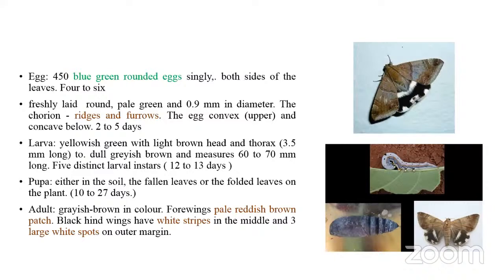The female moth lays around 450 blue-green rounded eggs sculpted singly on the leaves of the castor plant. Eggs are laid singly on both sides of the leaves; four to six eggs are observed on each leaf. Freshly laid eggs are round, pale green in color, and measure about 0.9 mm in diameter.